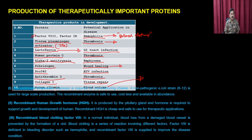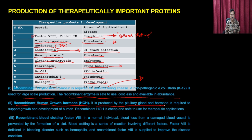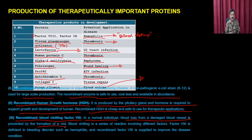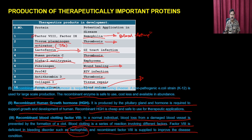Recombinant proteins like recombinant chymosin are used for large-scale protein production — they are safe, cost less, and available in abundance. Recombinant human growth hormone (HGH) is produced by the pituitary gland and required for human growth and development. Recombinant blood clotting Factor 8 is supplied to improve the disease condition in hemophilia, where blood clotting factors are deficient in bleeding disorders.